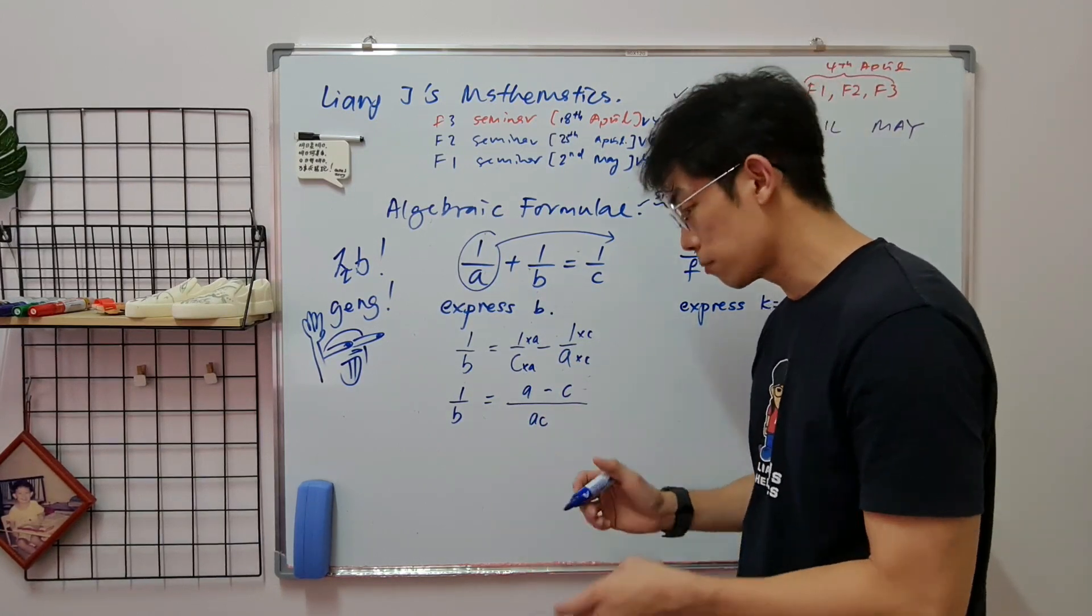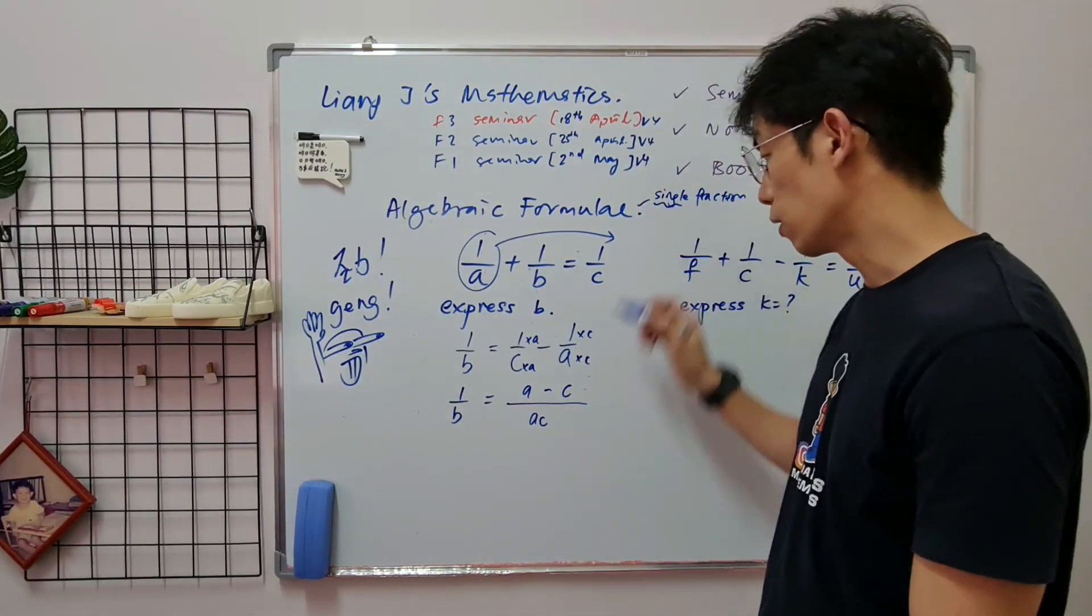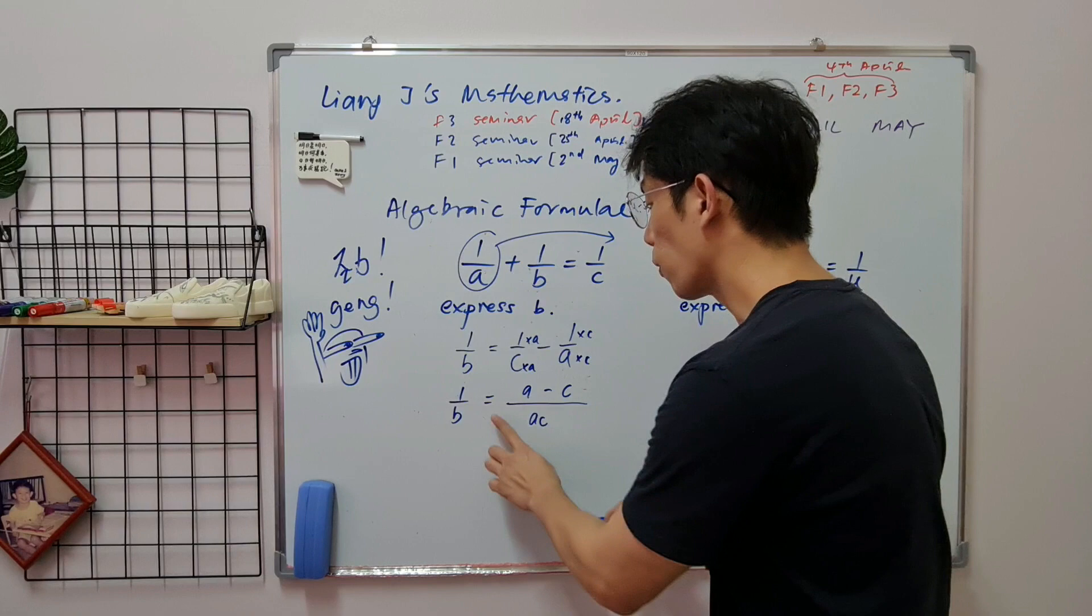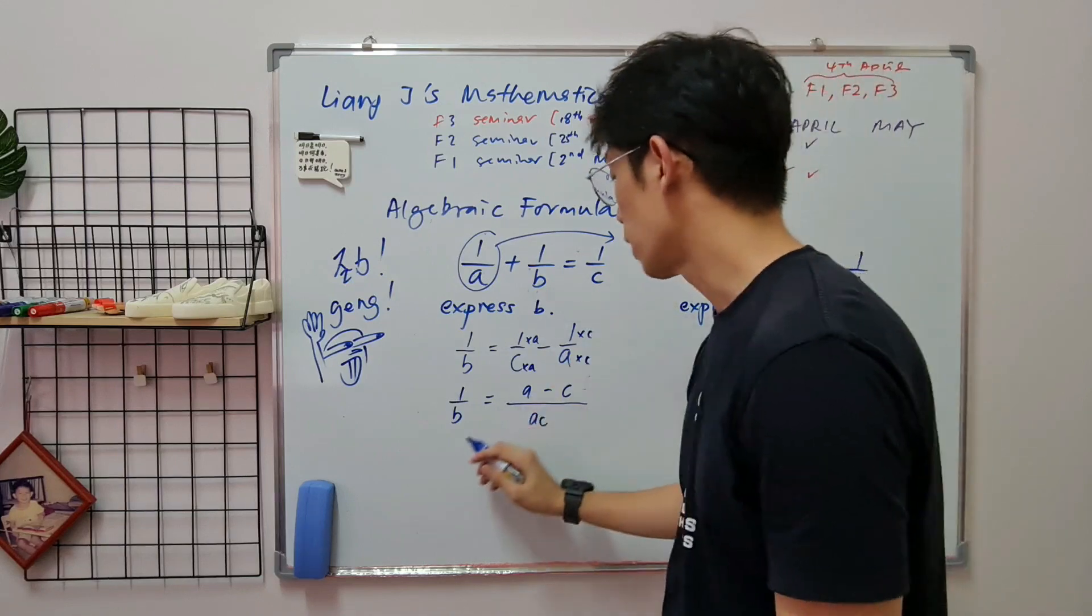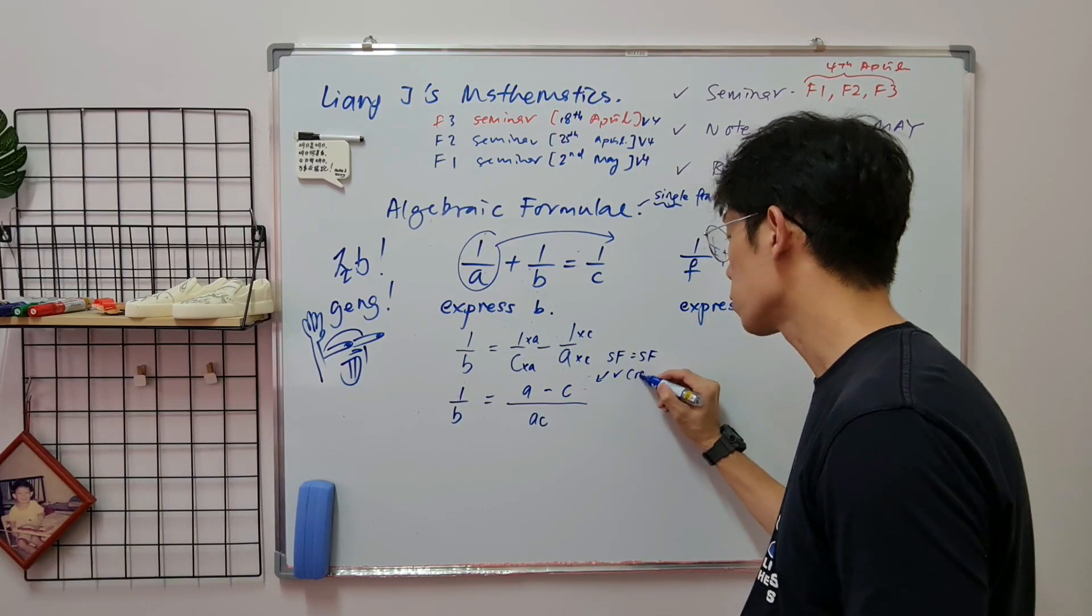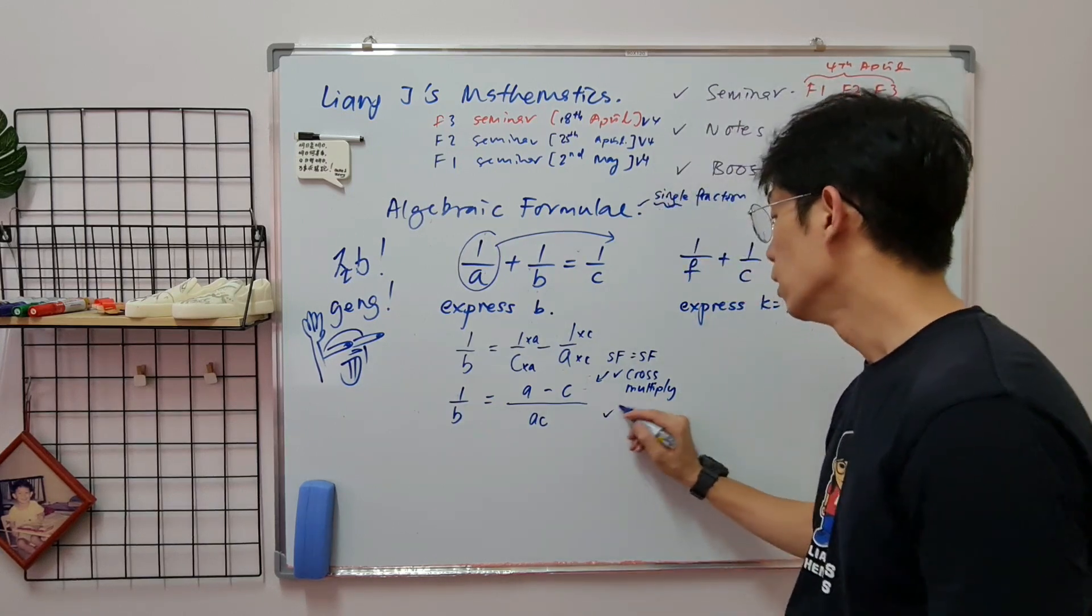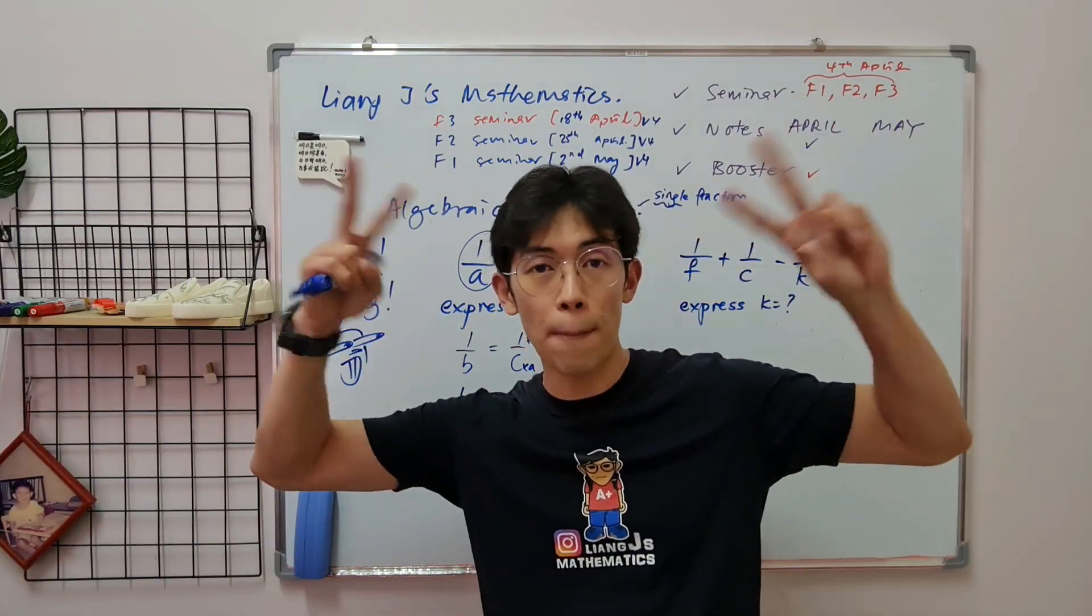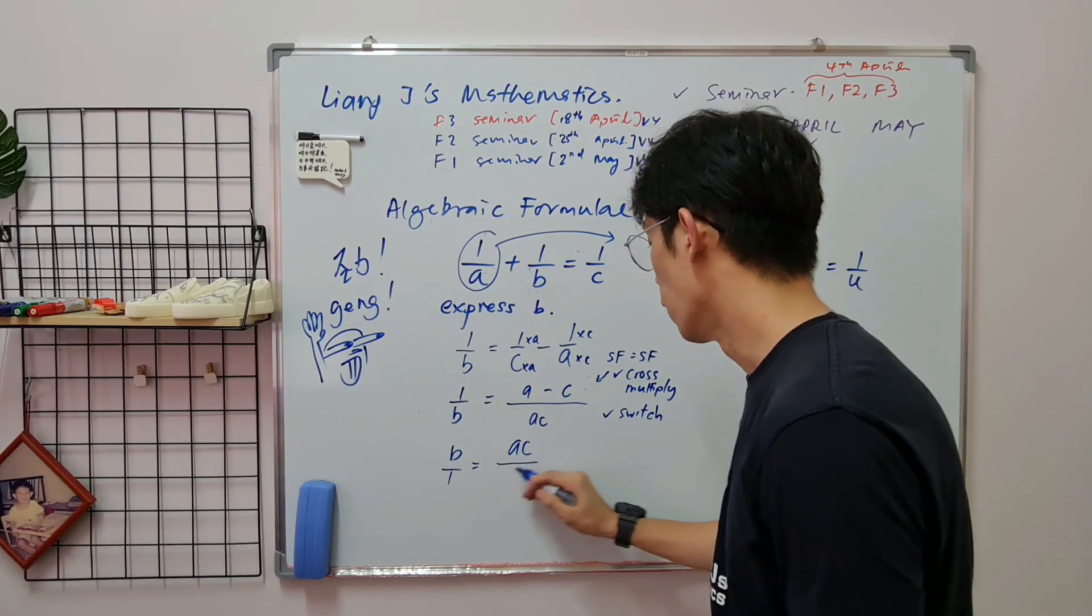Then after that you see this one A minus C. Now the pro tip comes in. Single fraction and single fraction. What are you going to do? Number 1, you can choose to cross multiply, but there's a better way. You can switch. Up and down switch together. So B over 1 equals to AC over A minus C.